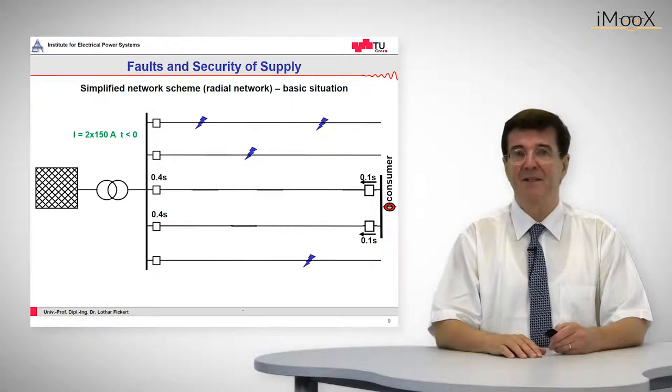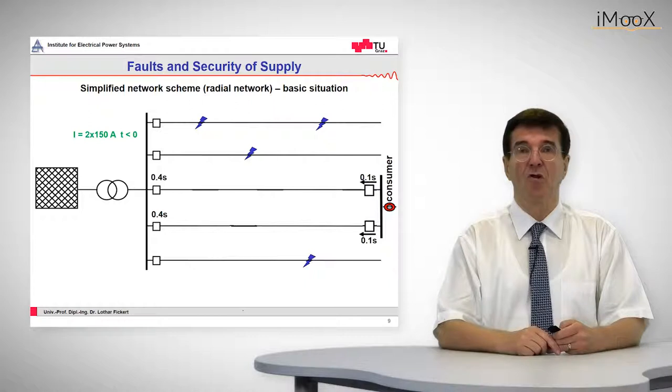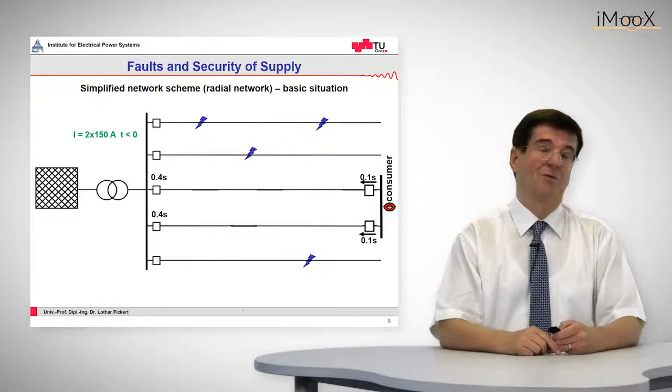So the protection dynamics in a ring structure are more or less the same. We have the ring structure again, and please note that the protection relays at the right side, at the consumer side, they have the indication, this arrow indication, the direction indication, and they have a very low time setting, 0.1 for example.